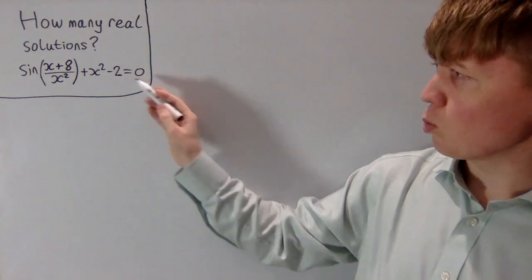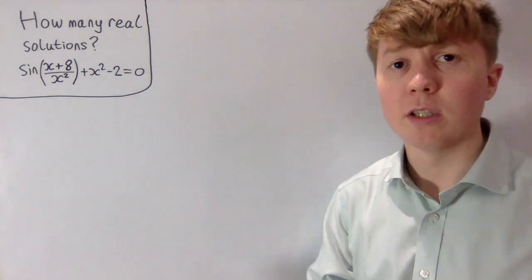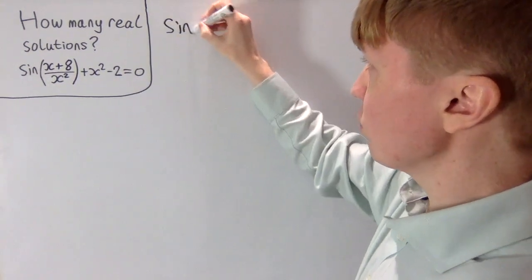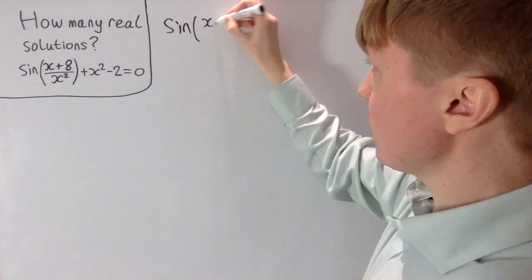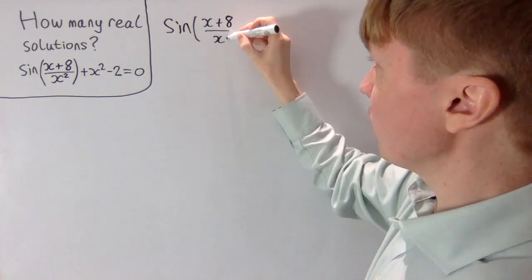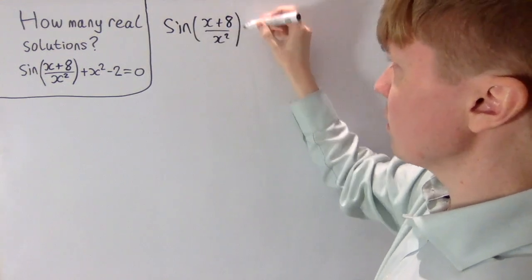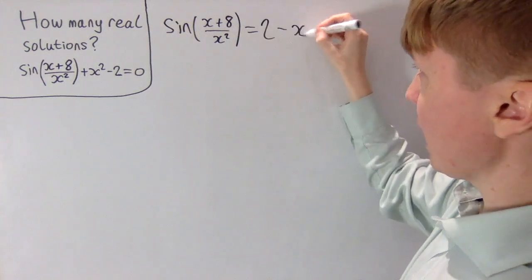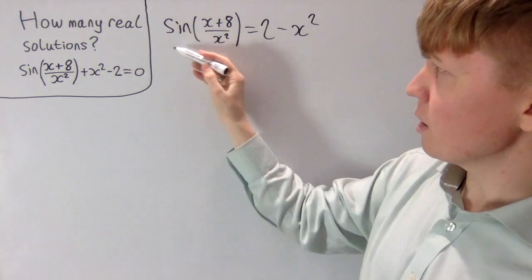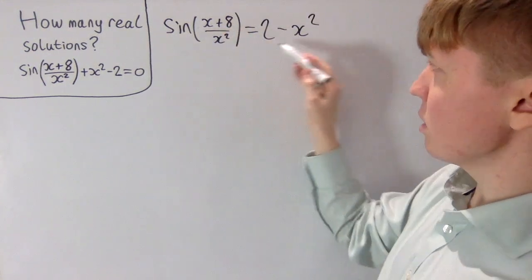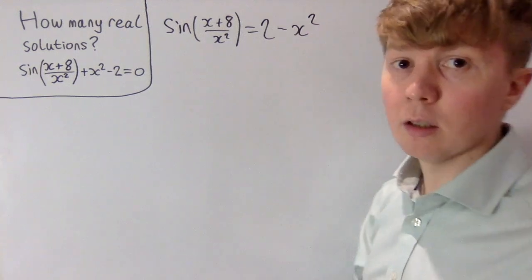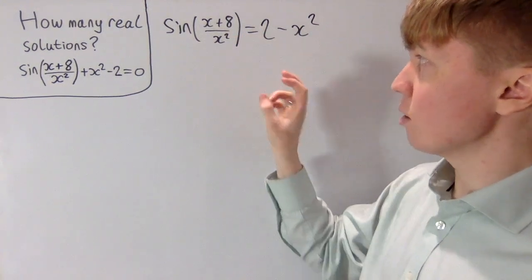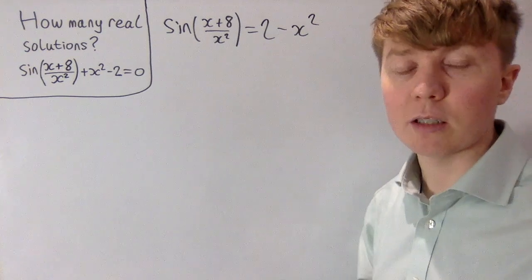Instead of treating this all as one function equal to zero, we'll split this up into sine of x plus 8 all over x squared, and equivalently we want this to equal 2 minus x squared. So we're treating one function as equal to another — looking at the graph of sine of (x+8)/x² and similarly for this quadratic.